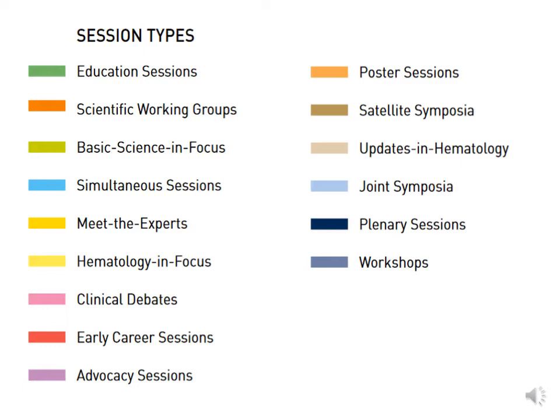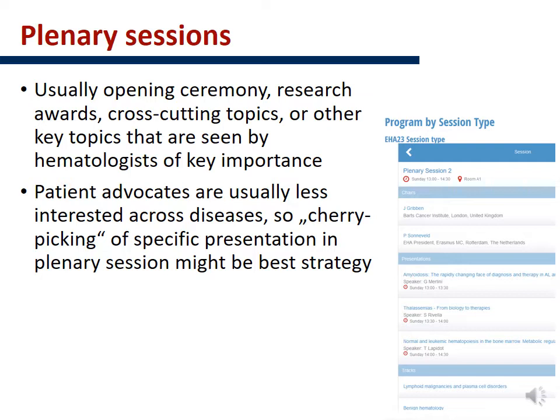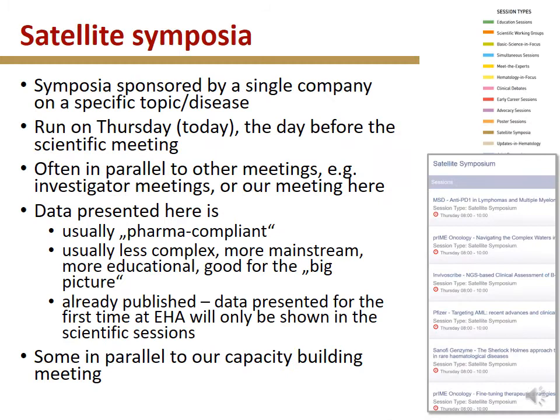These are the session types — you can see the different colors. The plenary sessions are usually opening ceremonies, research awards, and very cross-cutting topics across the different diseases, or key topics seen by hematologists as of key importance. For us as patient advocates, it's sometimes more difficult because we're quite often interested specifically in CML. Because these sessions are cross-cutting, there might be just one CML presentation or no CML presentation at all. For example, in EHA 2018, there is no CML-specific topic in the main session.